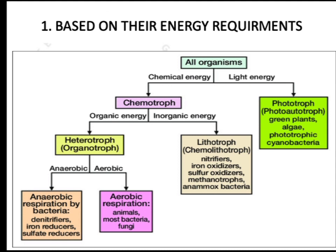Microorganisms can be classified into two groups: phototrophs and chemotrophs. In phototrophs, the microorganism will use sunlight or a light source for energy for the production of their nutrition. In chemotrophs, they may use energy from either organic compounds or inorganic compounds.